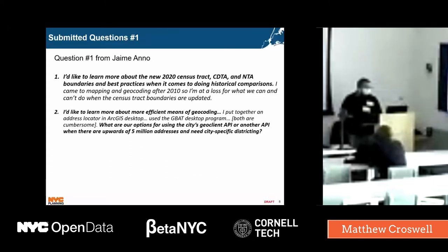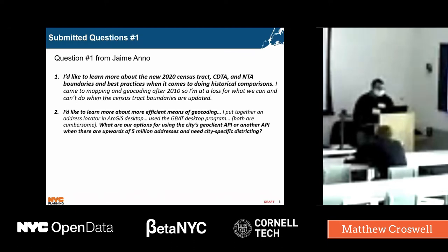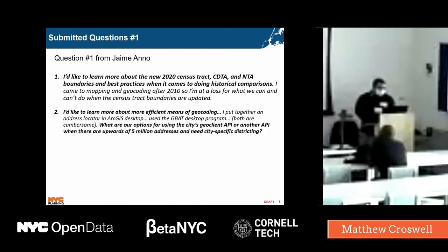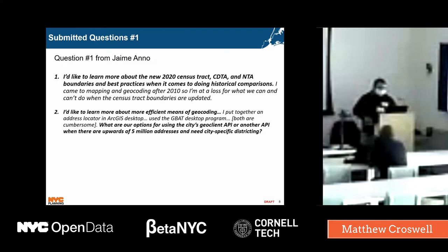The first pre-submitted question was from Jamie Anno. I'll read it for the recording: she'd like to learn more about the new 2020 census tract, CDTA, and NTA boundaries and best practices when it comes to doing historical comparisons with census. The second question was about more efficient means of geocoding — she noted it can be cumbersome and that she sometimes needs to geocode a very large amount of data, sometimes 5 million records or so.